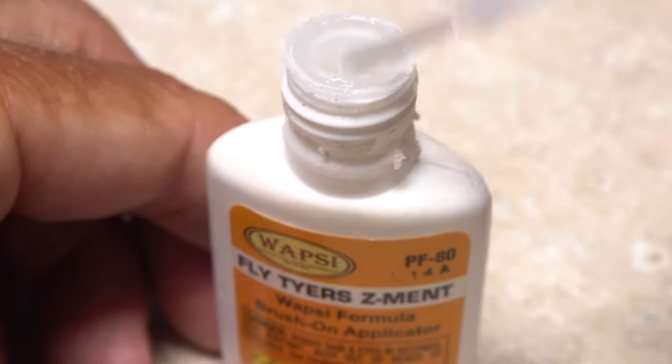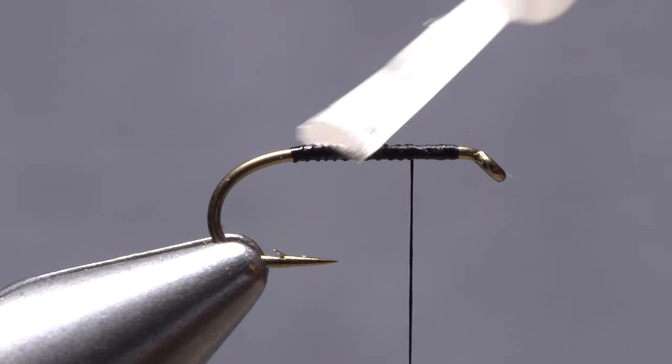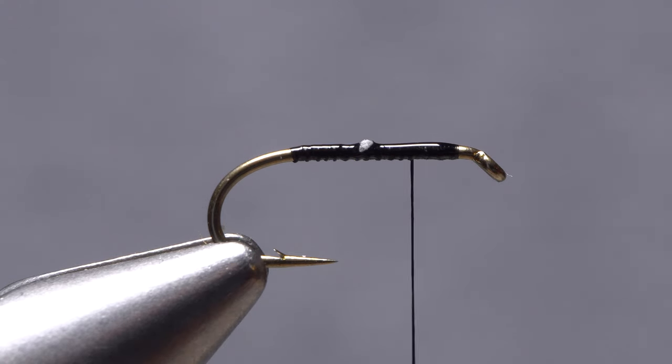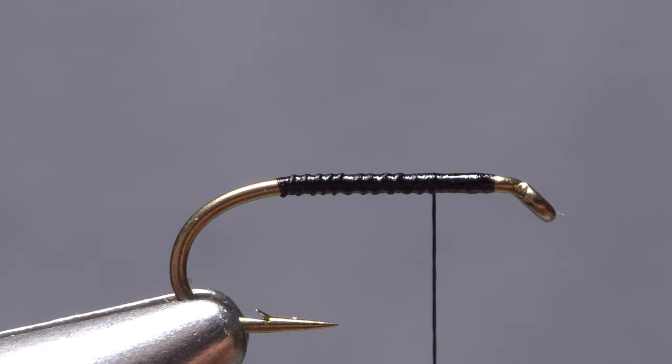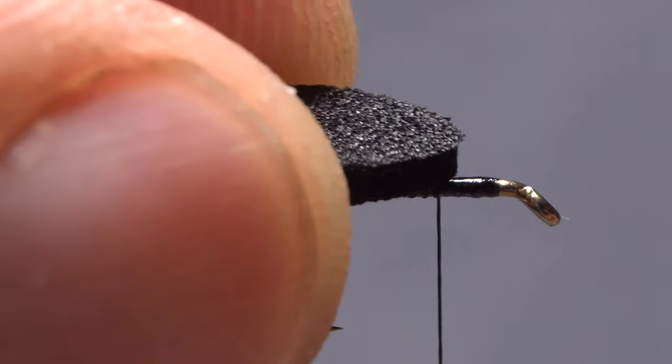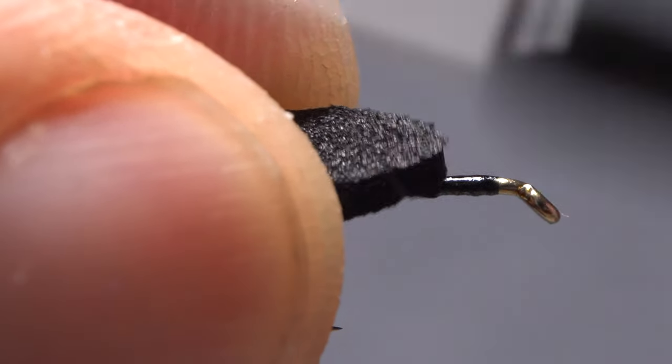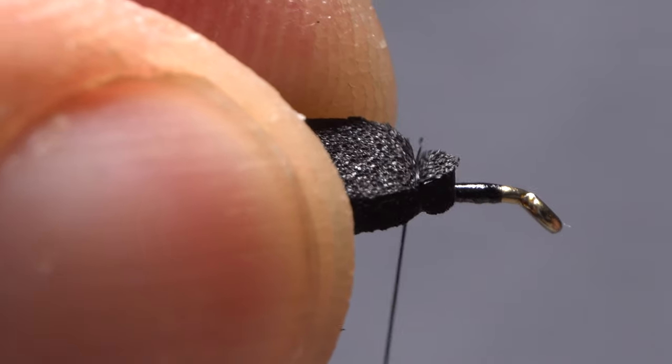Pick up a small amount of super glue, here Fly Tire Z-Med, and apply a light skim to the thread wraps on top of the hook shank. Lay one end of the foam, here what's normally the hind end, on top of the hook shank leaving a two eye length space behind the hook eye.